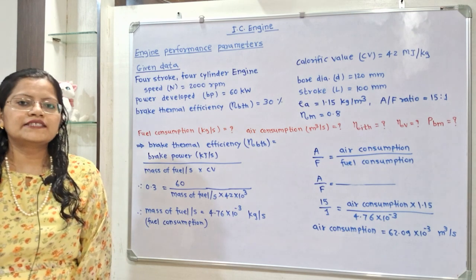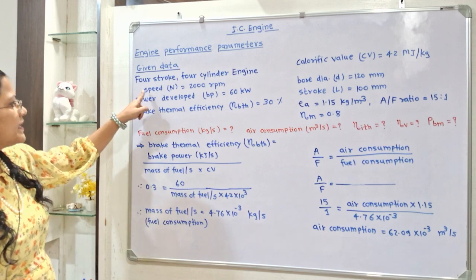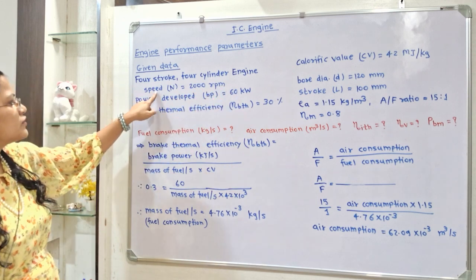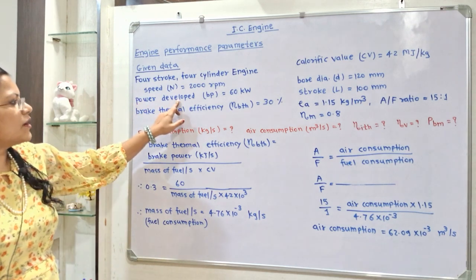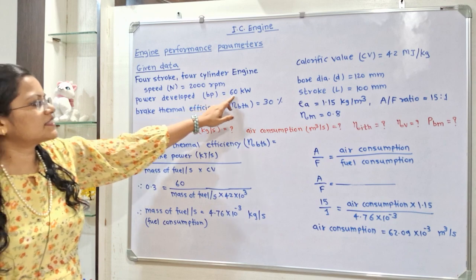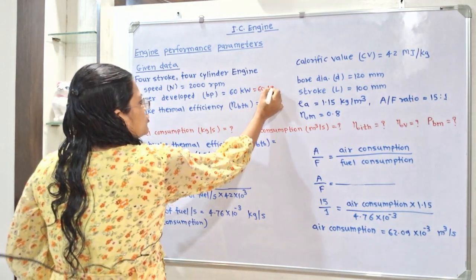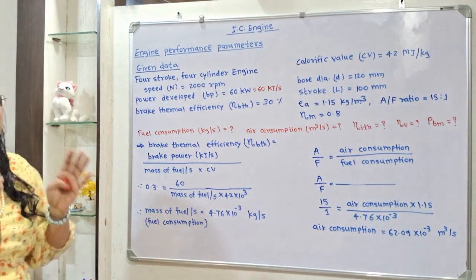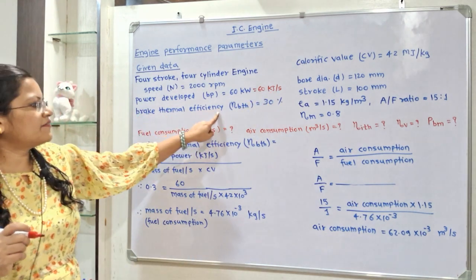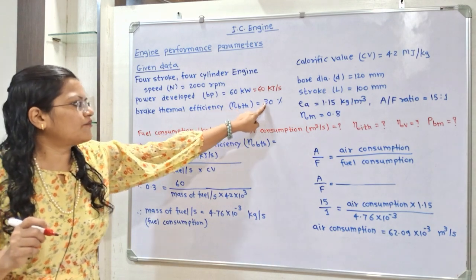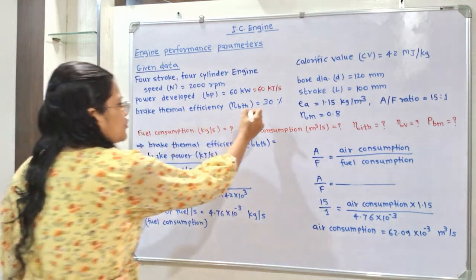Let us understand the given data. This is a 4-stroke, 4-cylinder engine. Speed n is equal to 2000 rpm. Power developed is also known as brake power — it is 60 kW, which we write as 60 kJ per second since Watt means Joule per second. Brake thermal efficiency η_BTH is 30%, that is 0.3.